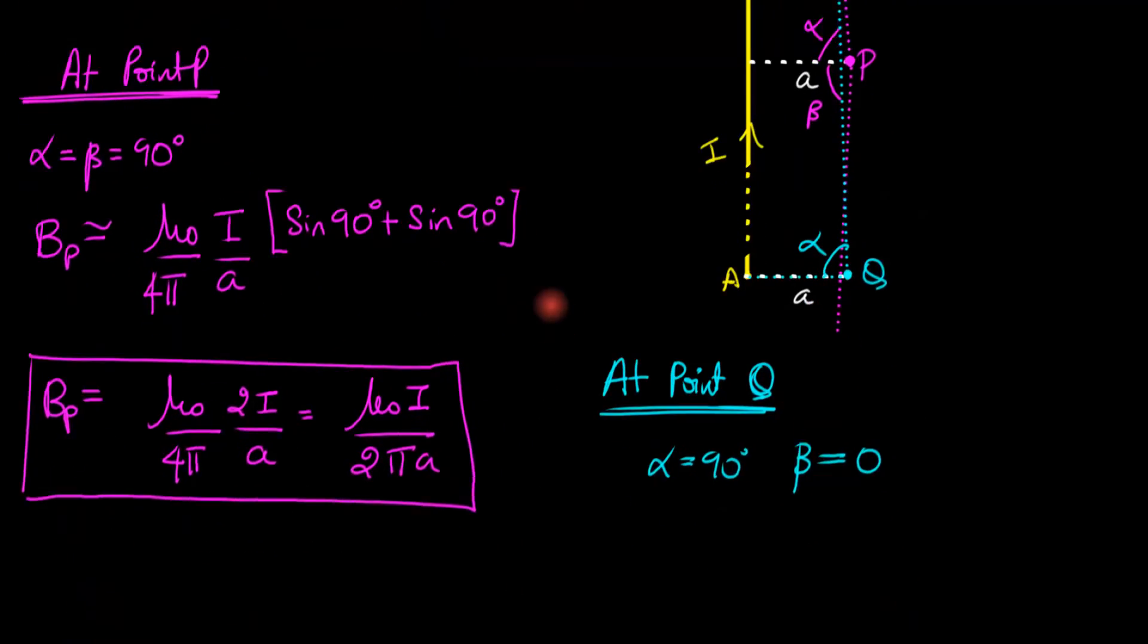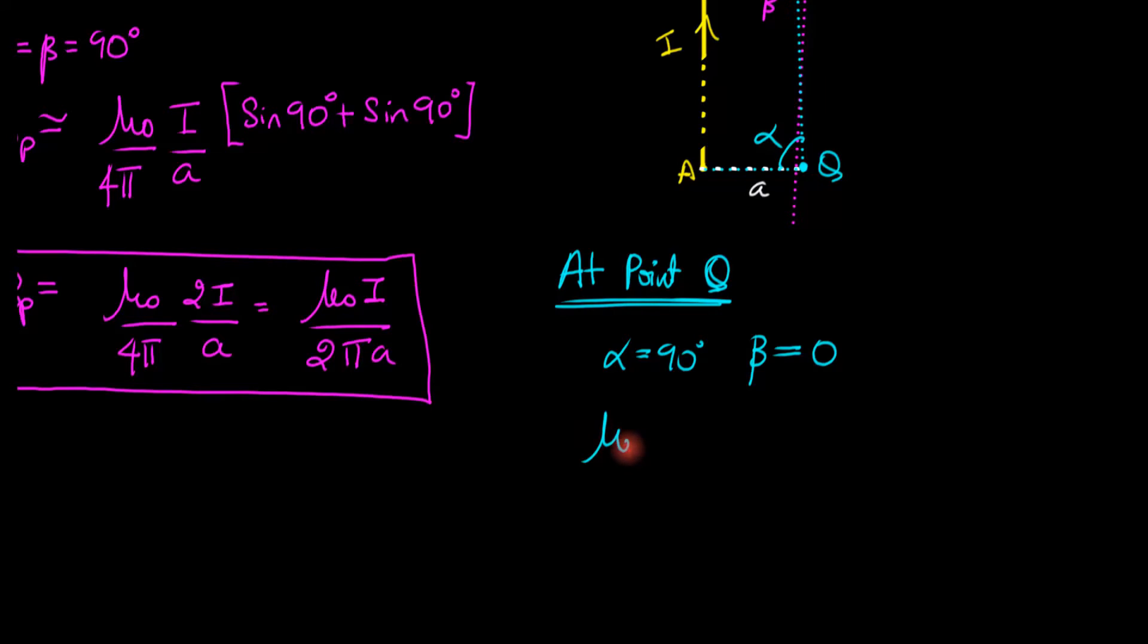So we end up with μ₀ divided by 4π times i divided by a times sin 90. This substitutes as 1 plus sin 0 which is 0. That equals μ₀i divided by 4πa. This is the magnetic field at point Q.